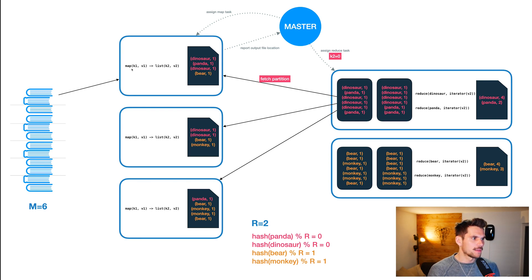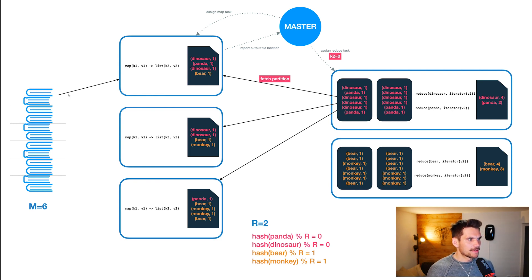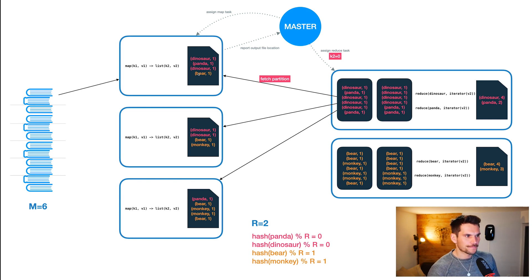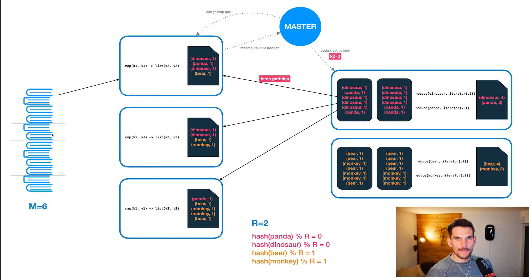What's happening in the three map workers is they load their split of the input data and then apply the map function specified in our user program. We are always dealing with one key and one value, and we can generate a list of another key and another value. For example, the input might be actual text, and we specify the map function to look for four words — dinosaur, panda, beer, and monkey — within the text. For each occurrence of a word we emit one key-value pair. The master has to schedule six tasks because we have six input splits, so the map function must be executed six times.